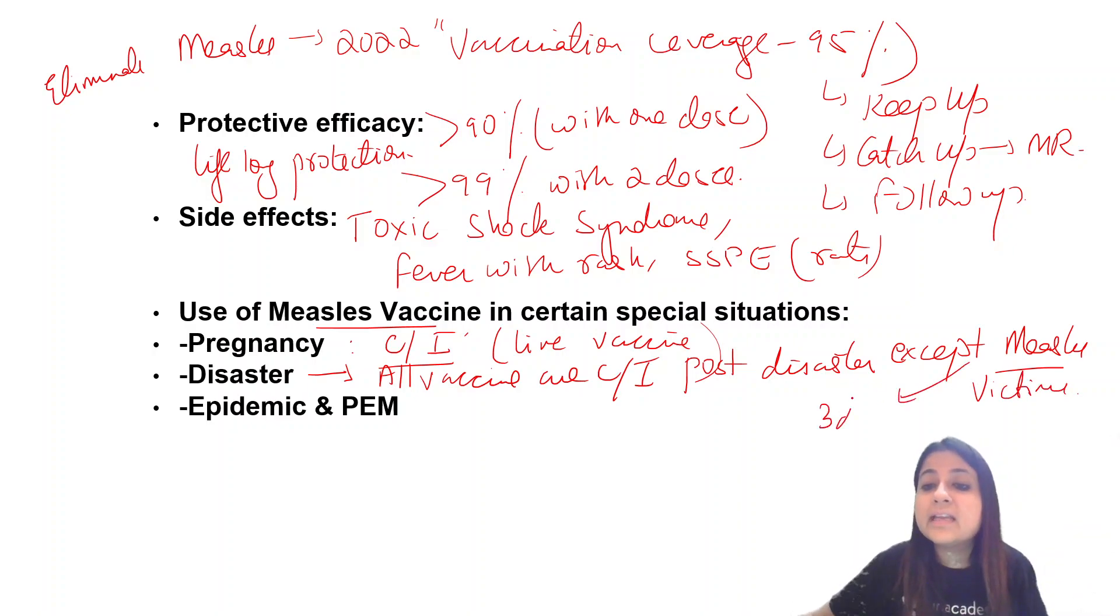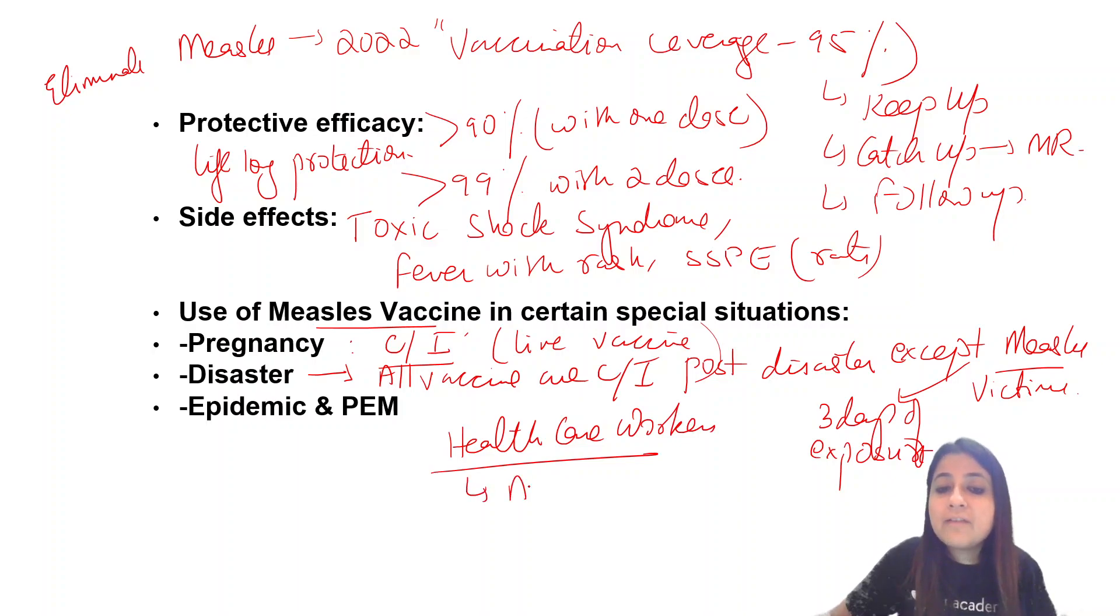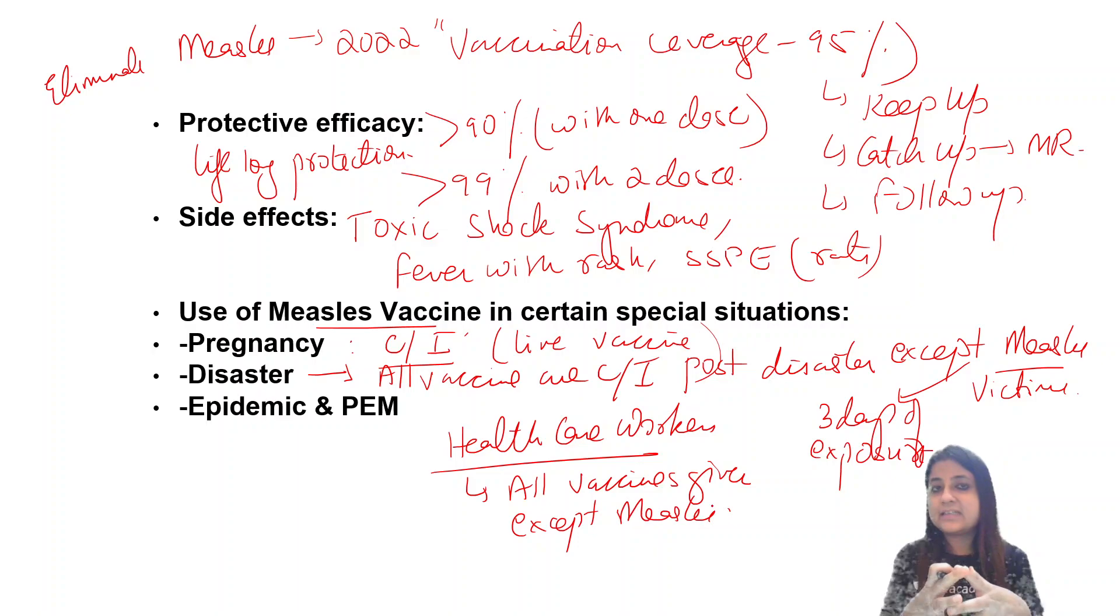You should give it within three days of exposure. But for healthcare workers in disaster-struck areas, you can give all vaccines except measles vaccine. To the victims, you give measles vaccine within three days of exposure, but not to healthcare workers.